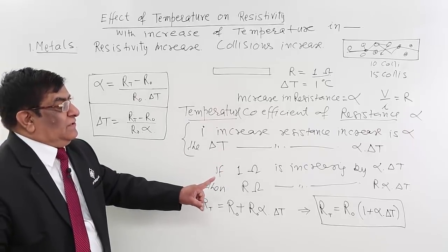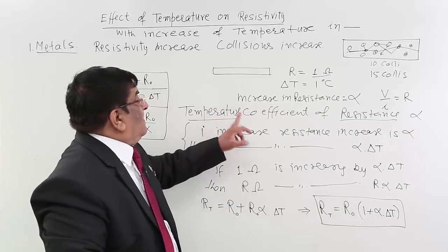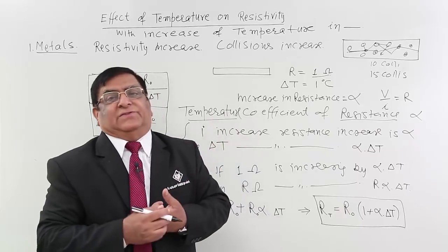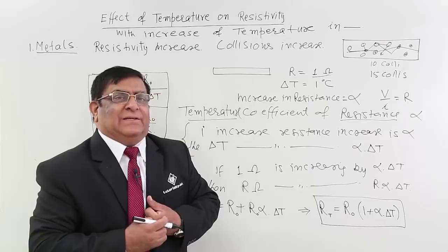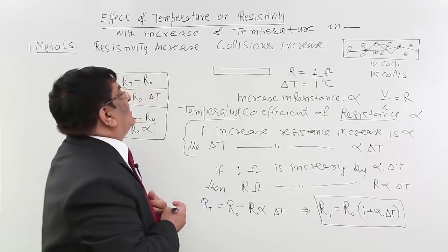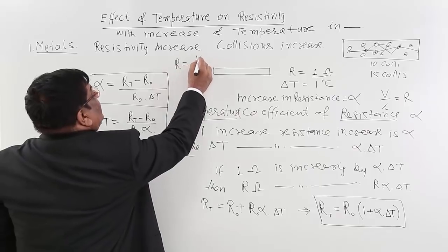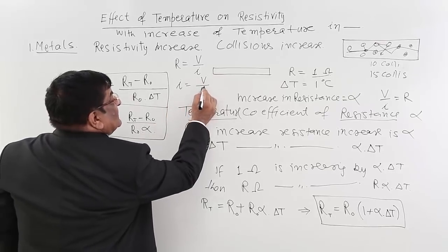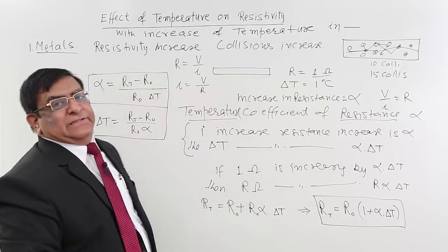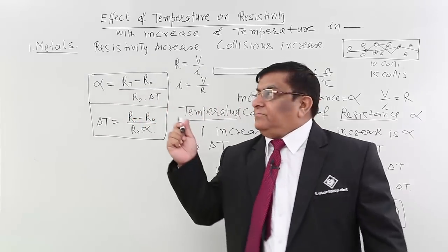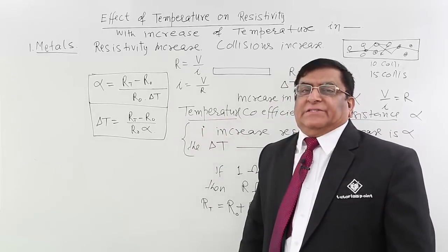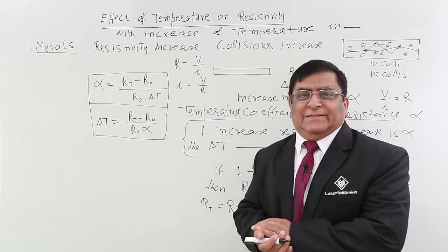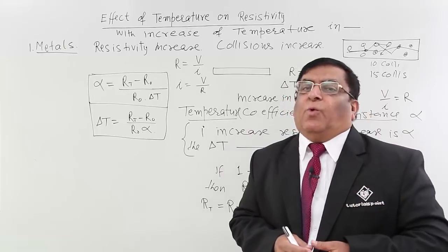This is the temperature coefficient of resistance. More is the temperature coefficient, more will be the change in resistance. And how do we know resistance has changed? We will know it by the current, because I equals V upon R. If resistance increases, current will decrease. So this way we can find out that resistance is increasing — it will show decrease in current. This is what happens in metals.